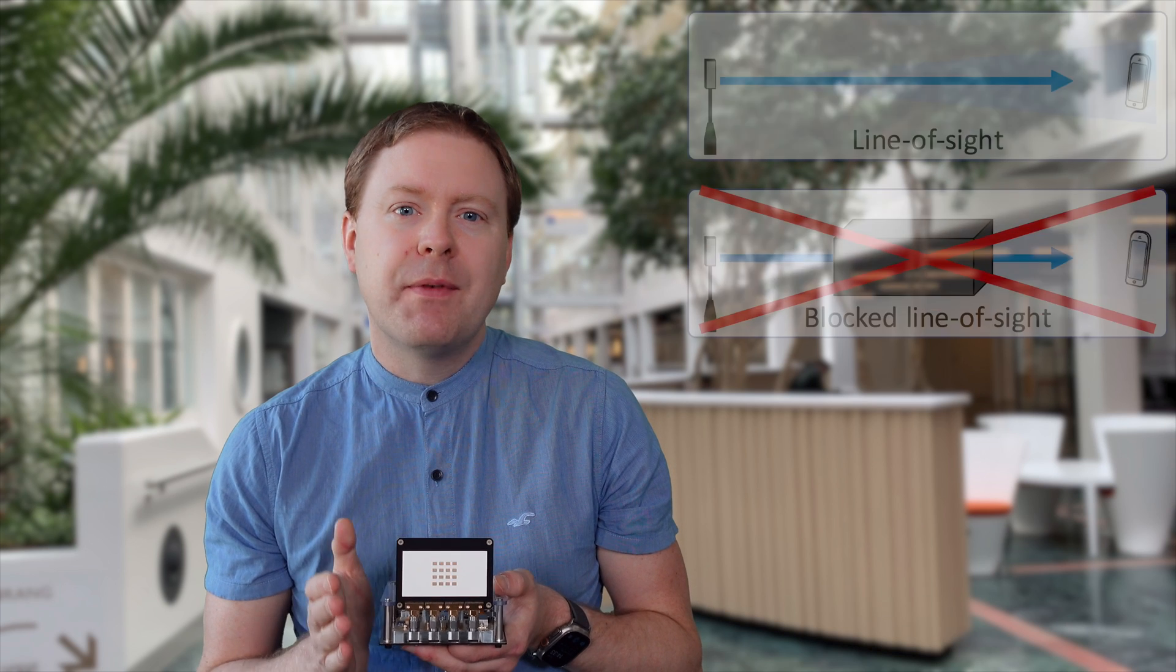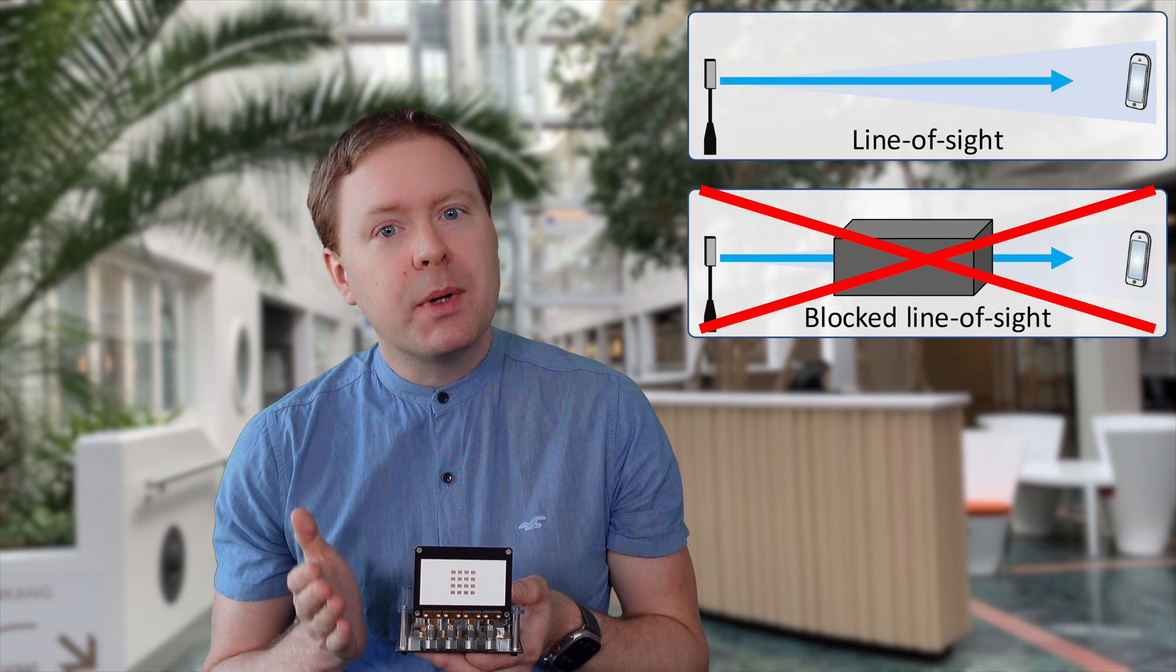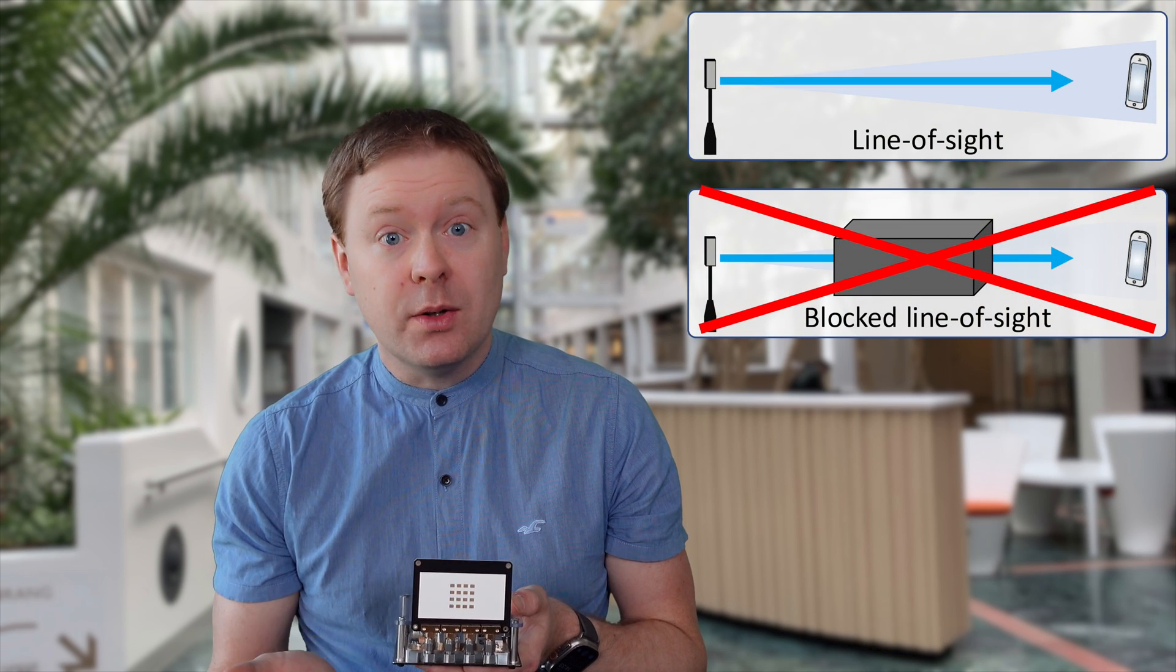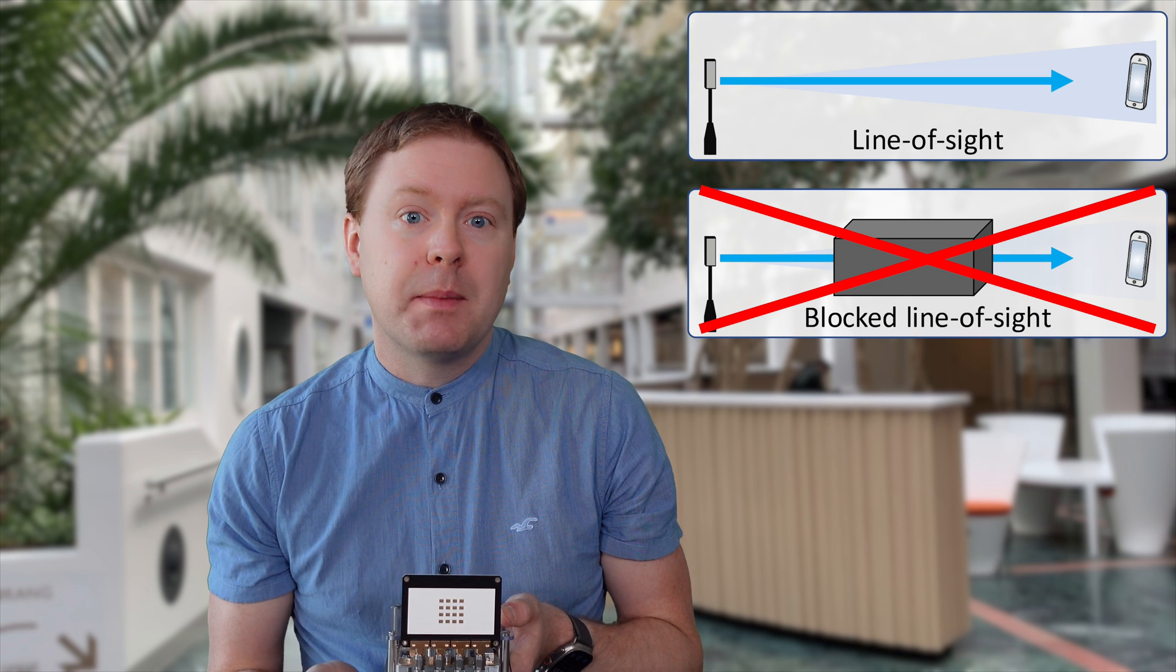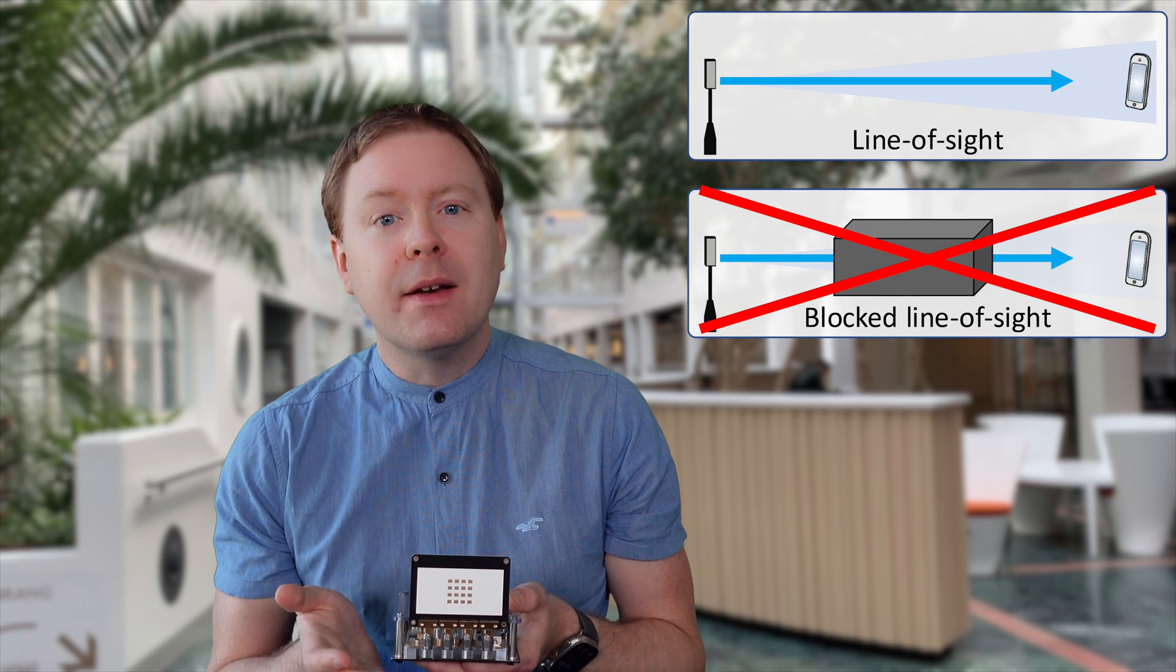In previous episodes, I have shown how wireless signals at millimeter wave frequencies are transmitted very directionally and don't propagate well through various kinds of materials. That means millimeter wave systems are mainly for line-of-sight usage.